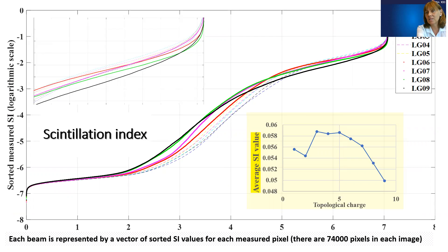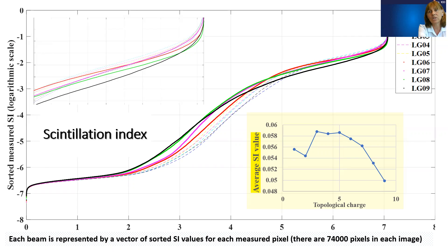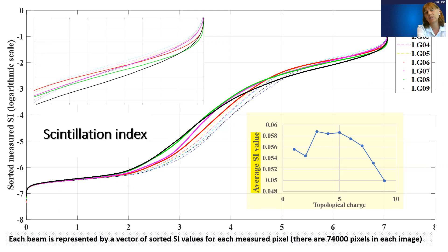We are getting the expected result from theoretical predictions where the average scintillation index is lower for higher topological charge, but we are also seeing slightly lower values for the lower topological charges as well, and those relate to how many pixels are engaged and what's happening with the image as a whole. The other plot shows the sorted scintillation index for every pixel in our image — we have about 74,000 pixels per image. For example, the black trace, which is topological charge 9, shows the highest concentration of low scintillation index values, and the distribution is different even at very low scintillation index values.